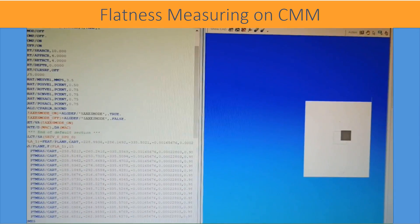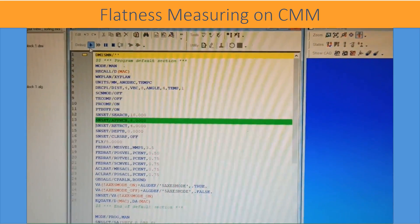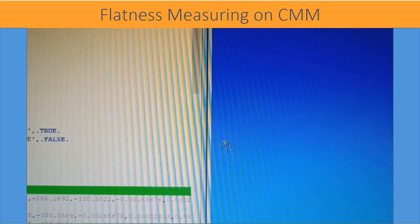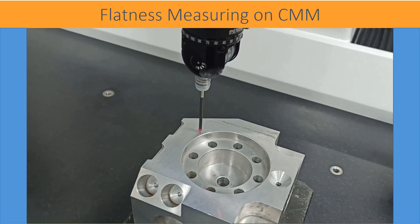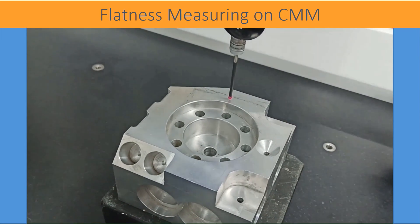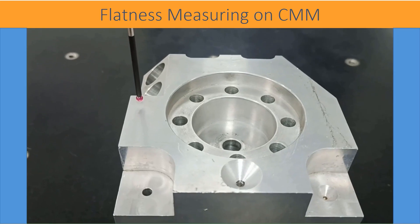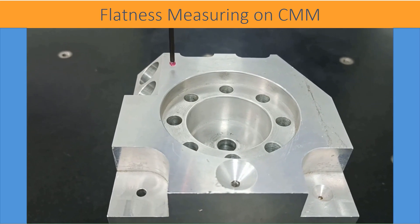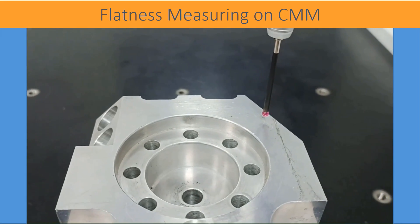Total 15 points are probed. Once you confirm it is OK, it shows the actual values x, y, z, i, j, k and the form. Here, form is the flatness. You add the nominal value as well.